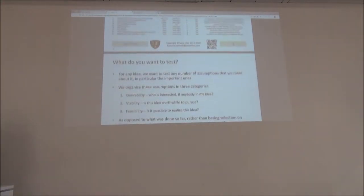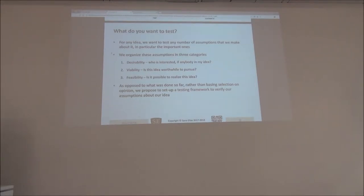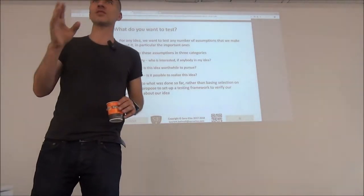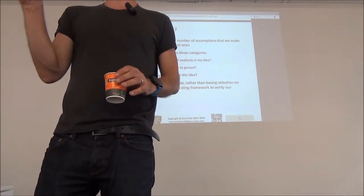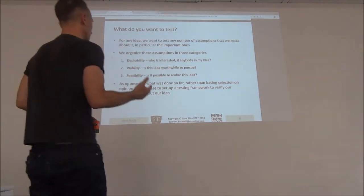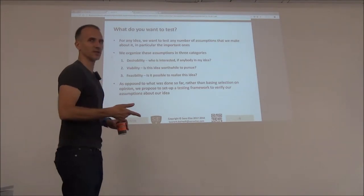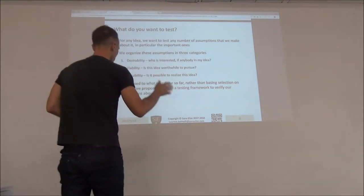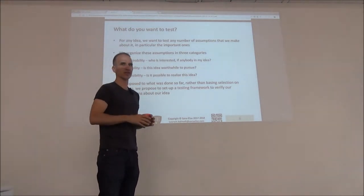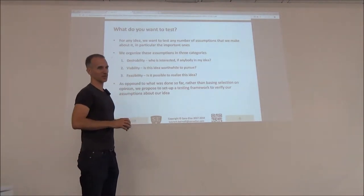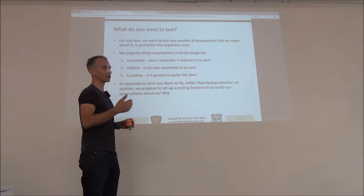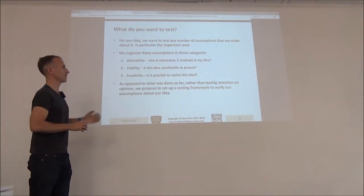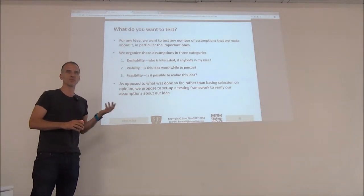Perhaps the most important thing I explained last class is that when you're trying to test ideas, you make assumptions on three types of umbrellas for ideas. The first one is desirability — is there a market, is anyone interested in my idea? Then viability and feasibility. The criteria that you chose somehow connect to one of these things. These are the three types of assumptions you make about your ideas, and it really helps you to assess if you have something that might have a market, might be viable economically, and is feasible.